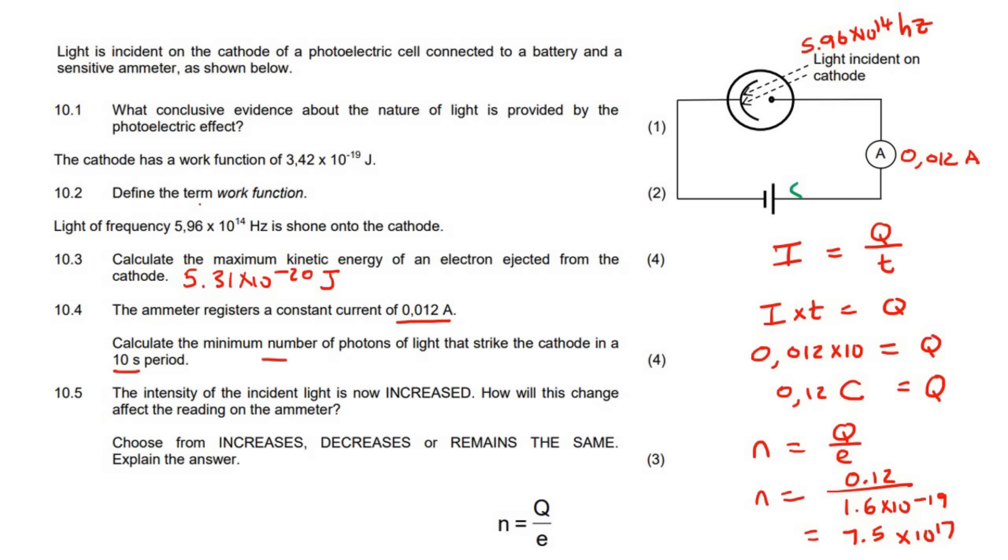It asks how many photons of light do we need. Remember, in the light, there's little individual packets which are called photons. When one photon hits the surface, one electron gets released. If this is how many electrons are released, then that is also how many photons we need. So, 7.5 times 10 to the 17 photons.